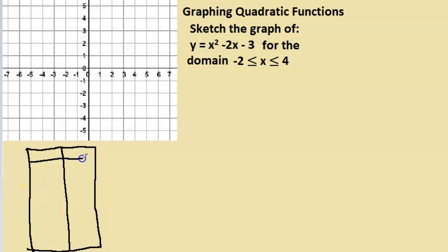The x value runs from -2 to positive 4, so -2, -1, 0, 1, 2, 3, and 4.